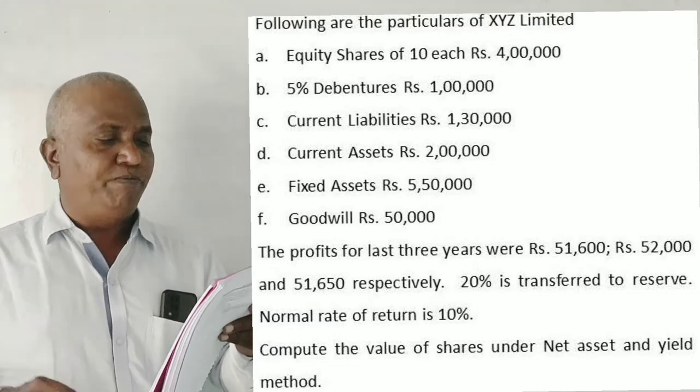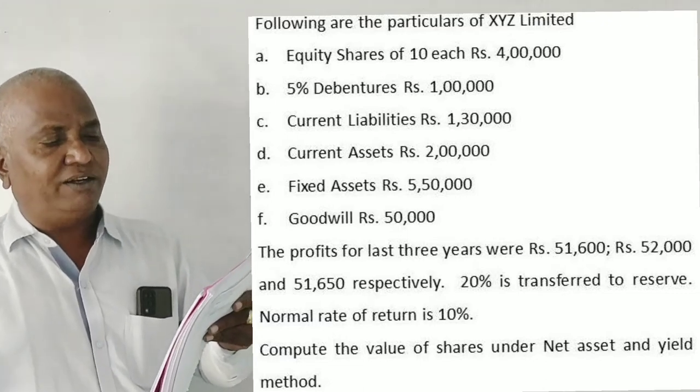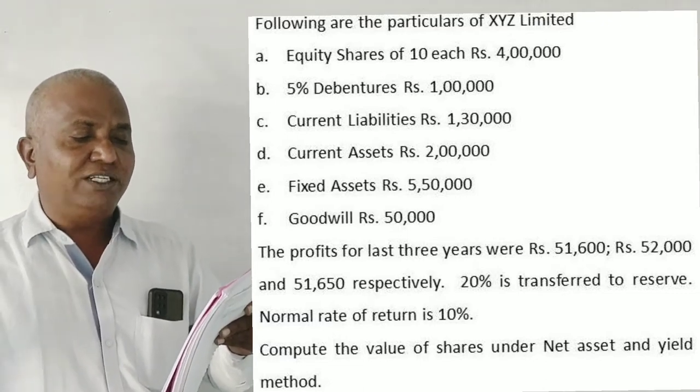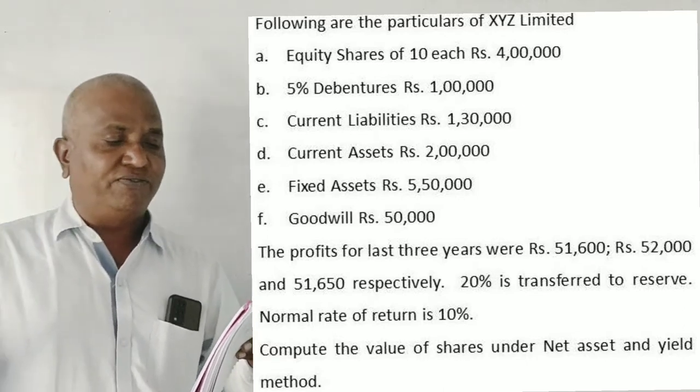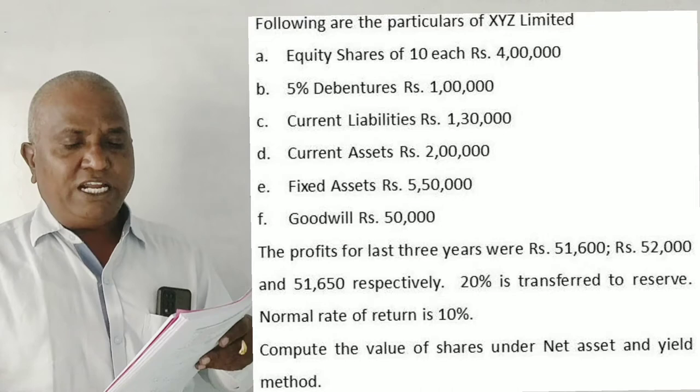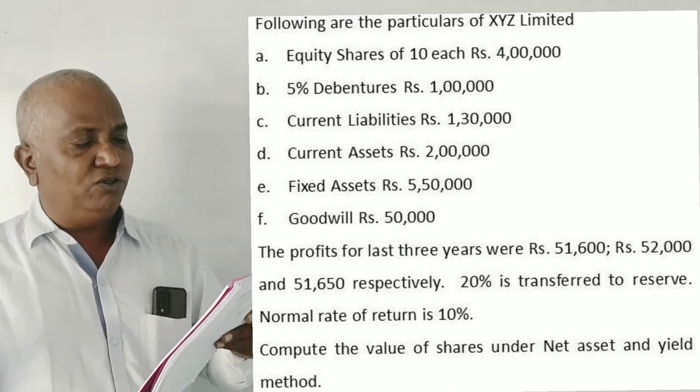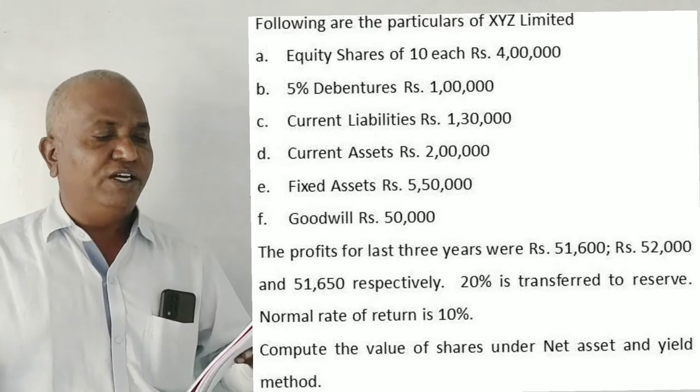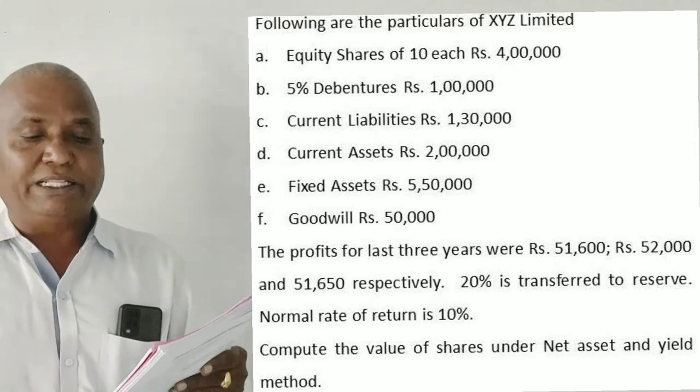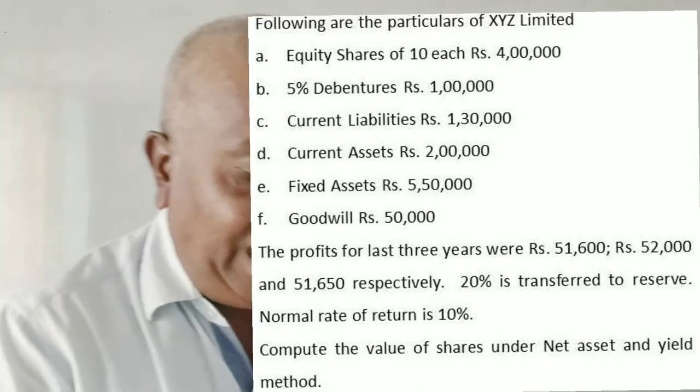Fixed assets is 5 lakh 50,000, goodwill is 50,000. The profits for the last 3 years were 51,600, 52,000, and 51,650 respectively. 20% is transferred to reserve. Normal rate of return is 10%. Compute value of shares under net asset method and yield method.